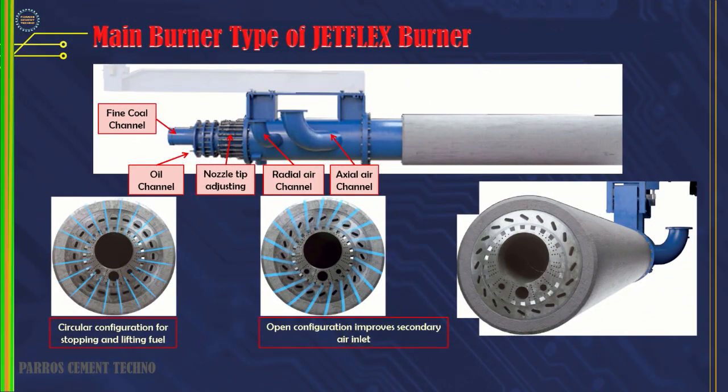The JetFlex burner type — for axial air this can be changed into a circular shape or can also be rotated into a swirl shape. Radial airways can be retracted as needed. For more details, see the following video.